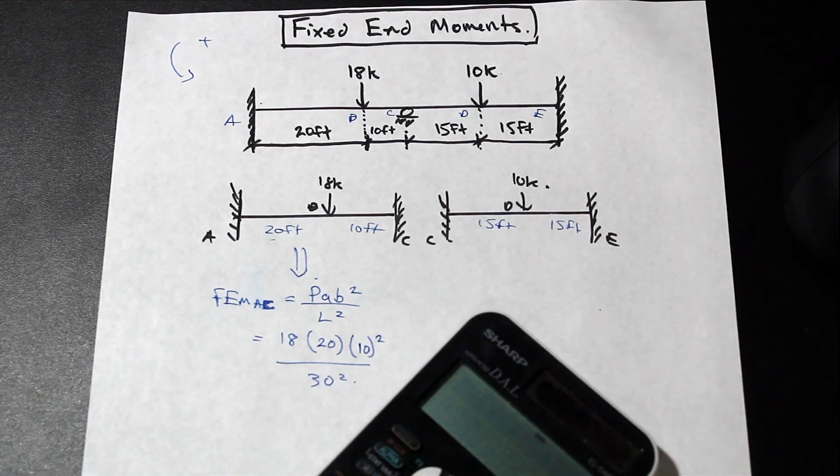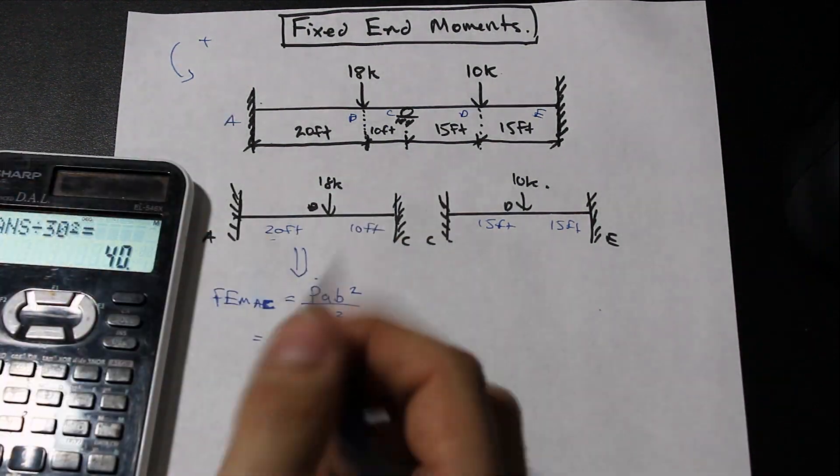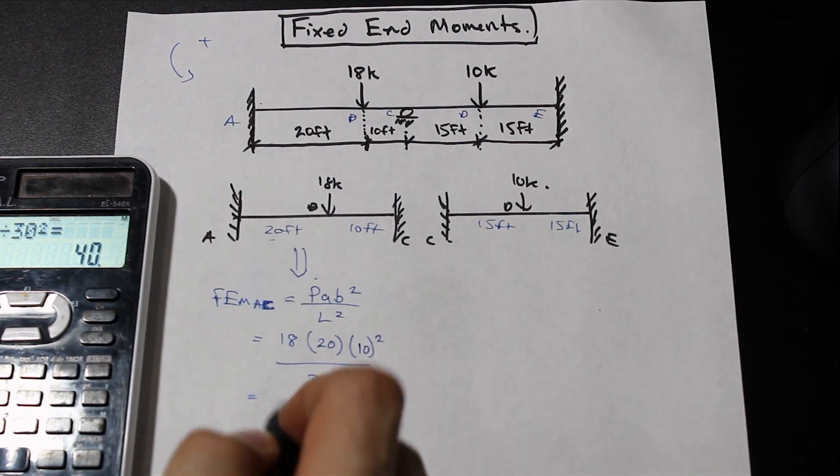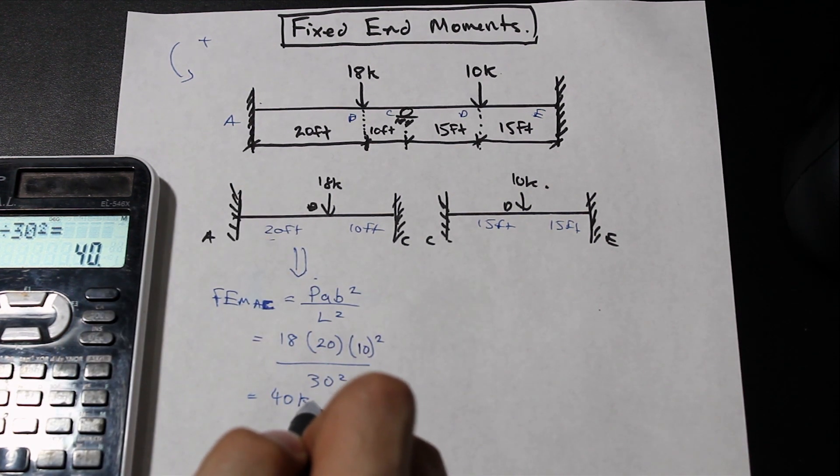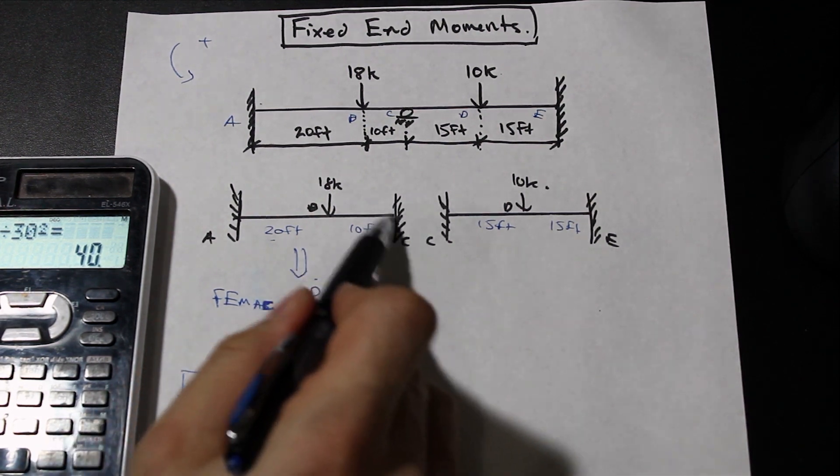If we punch that into our calculator, we're going to get 40. So the fixed end moment for AC, that's going to be right here, is 40, and the units are kip feet. Perfect.